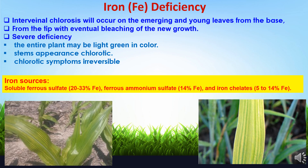When iron deficiency is severe, the chlorotic symptoms are irreversible even if correctional measures are taken, so measures should be applied in early phase. Iron sources include water-soluble ferrous sulfate, which contains 20–33% iron; ferrous ammonium sulfate, which contains 14% iron; and iron chelates, which contain 5–14% iron content. Timely application is needed to get recovery from iron deficiency.